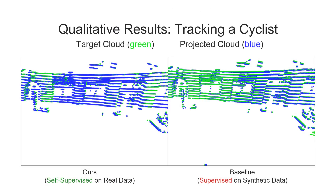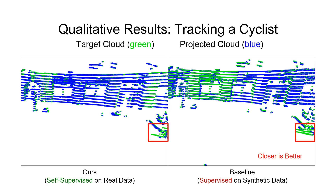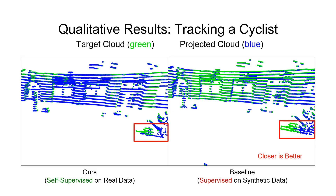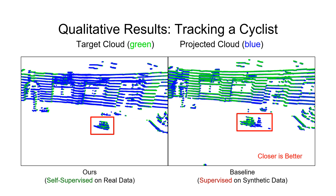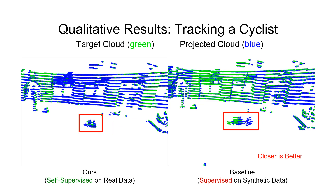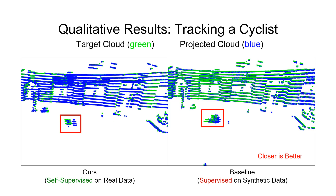Qualitatively, we find that our method outperforms the baseline on the NuScenes dataset. The target cloud is shown in green and the projected cloud in blue. As you can see, we are better able to track the cyclists, outlined in red, when compared to a method trained purely on synthetic data.